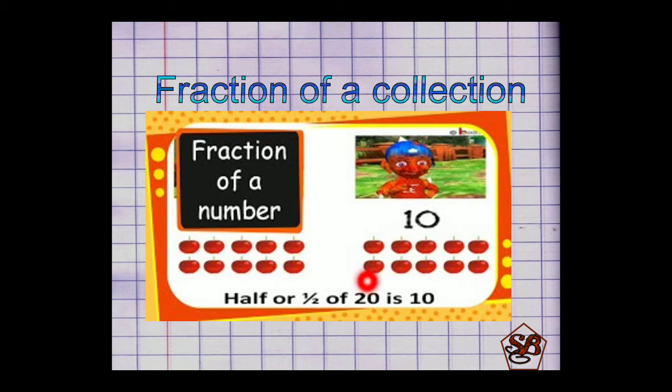Here you can see there is a collection of apples and in all there are 20 apples. And if we have to find out half or 1/2 of 20, it will be exactly 10. We have to divide them into 2 equal groups as the denominator here is 2. So each group will have 10 apples. So our final answer will be 10.